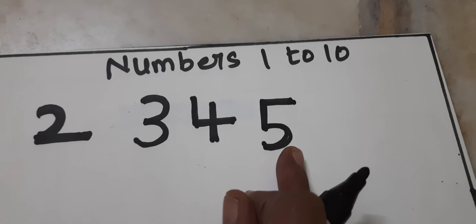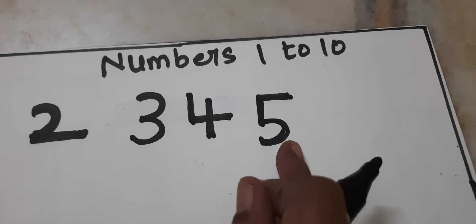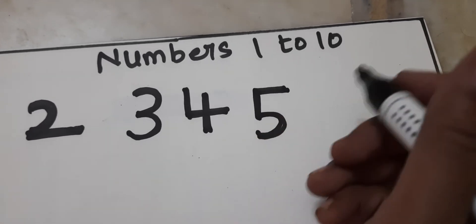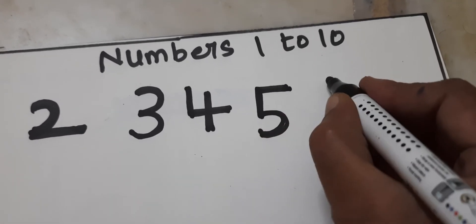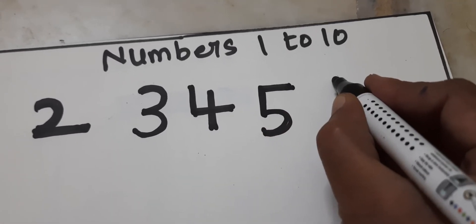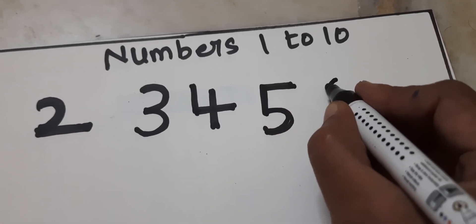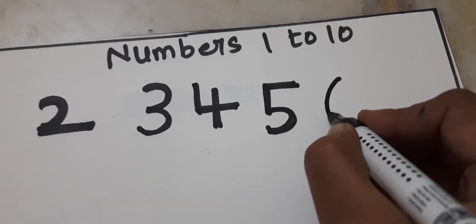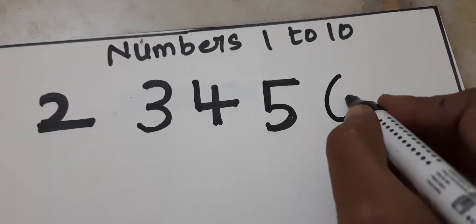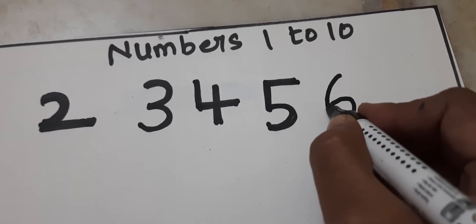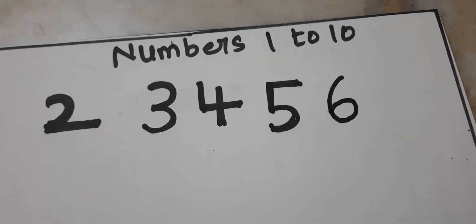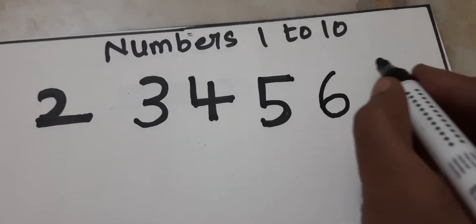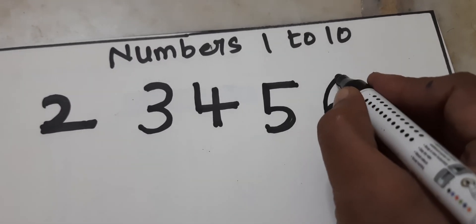How to write 6? Small slanting line, then 1, 3, 4, 5. Then 1, 3, 5 — number 6.